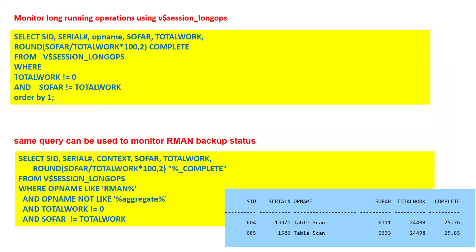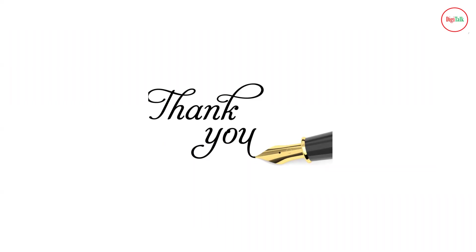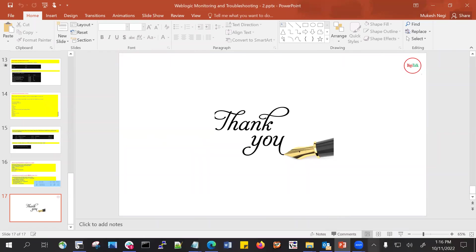There are a few more commands related to connected active sessions and deactivated sessions that you can run from the v$session table, with more details on sessions per user. To monitor long running operations, use the relevant query to find all long running sessions — these can choke your application threads if they are not released. If you have RMAN backup set up, a second query lets you check whether the backup is running and what percentage is complete. These are some basic commands — stay tuned for more advanced database query videos. Thank you for watching.